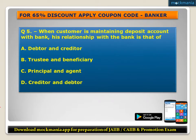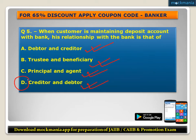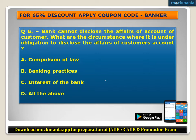Question number five: When a customer is maintaining a deposit account with a bank, the relationship with the bank is that of? Options: A) debtor and creditor, B) trustee and beneficiary, C) principal and agent, D) creditor and debtor. The correct answer is D - creditor and debtor. The customer is the creditor and the bank is the debtor.